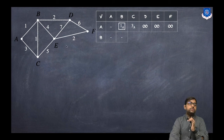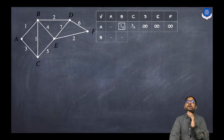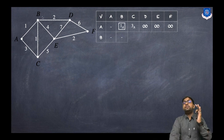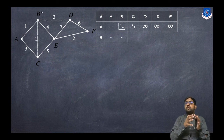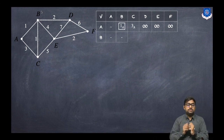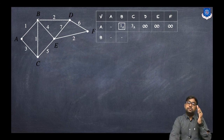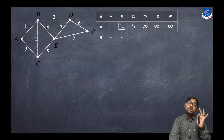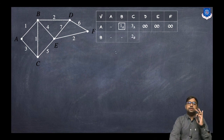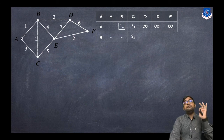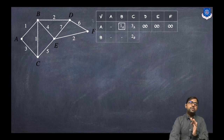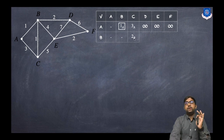We are trying to find the minimum path from A to F. A is done, and now we jump to B — so we look for the shortest path from B to each and every vertex. Now B to C: the edge weight is 1, but the source node distance was 1, so 1 plus 1 equals 2. We are reaching C via B, so we write 2B.